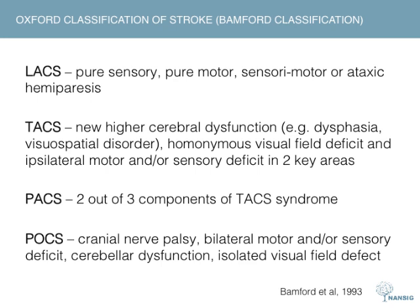A total anterior circulation stroke, or TACs, has more extensive symptoms and is therefore predictive of occlusion of a larger, more proximal vessel than a PACs — a partial anterior circulation stroke — which has only two components of a TACs and is likely caused by occlusion of a smaller or more distal vessel supplying a more restricted brain area. Lacunar strokes, or LACs, produce a more restricted syndrome of purely sensory, purely motor, or sensorimotor hemiparesis without higher cerebral dysfunction, highly predictive of small infarcts in subcortical areas such as the basal ganglia or pons.